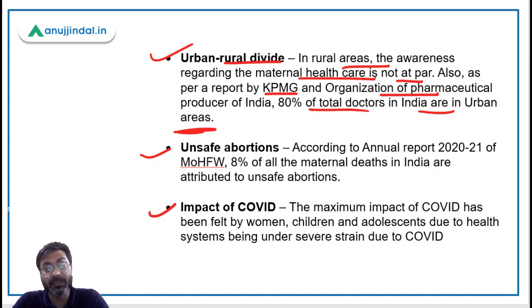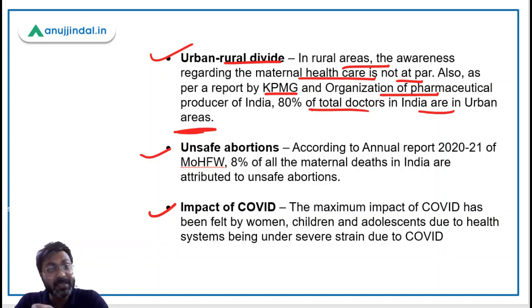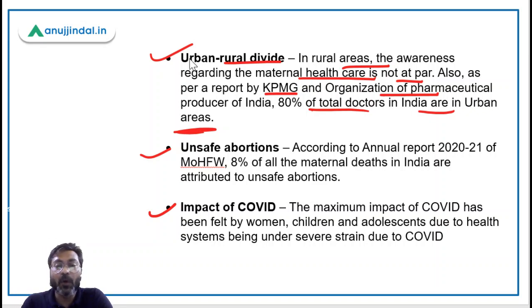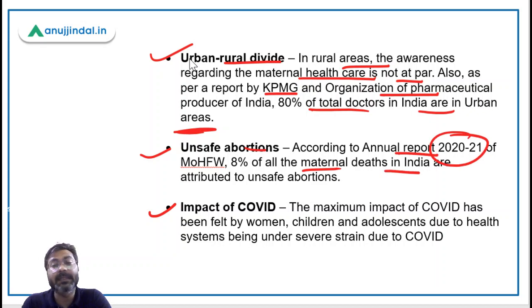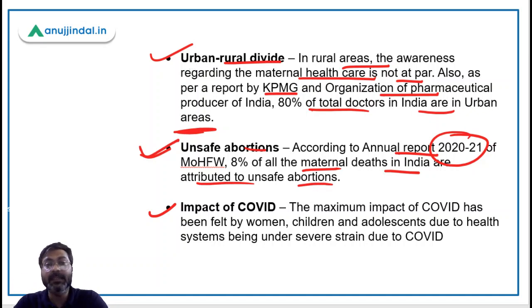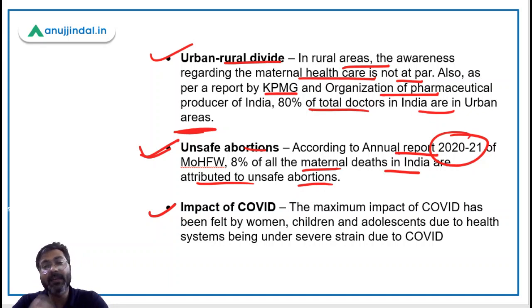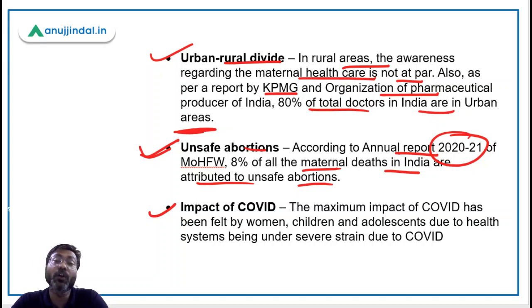If you write evidence-based answers using indices and reports, the examiner will not have any reason to cut your marks. For example, on unsafe abortions: according to the Annual Report 2021 of the Ministry of Health and Family Welfare, 8% of all maternal deaths in India are attributed to unsafe abortions. By citing this report, the point is validated — this is how evidence-based writing strengthens your answer.